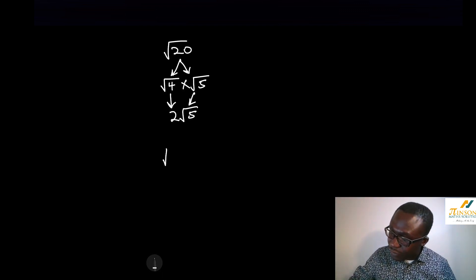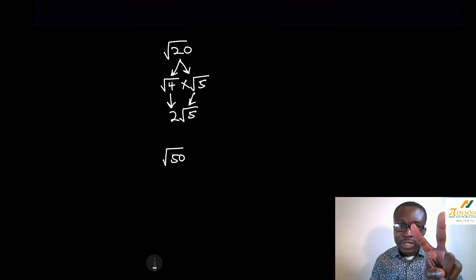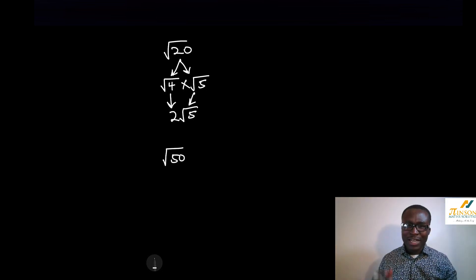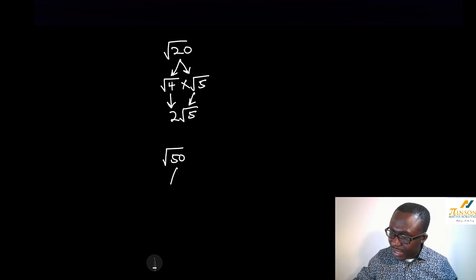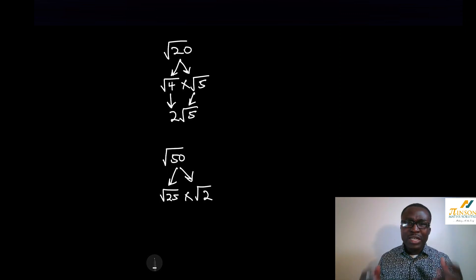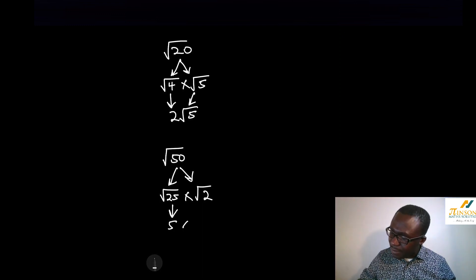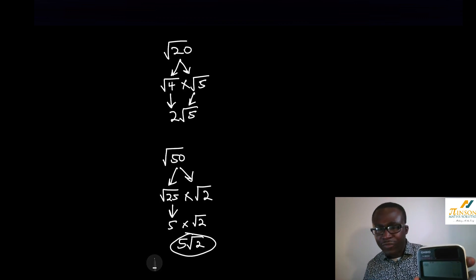Let's try square root of 50. Pause and have a go if you think you've got it. We need two numbers that multiply to make 50, where one is the largest square number. That's 25, since 25 times 2 is 50. Square root of 25 is 5, and multiplying by square root of 2 gives us 5 root 2. You can check this on your calculator — type in square root of 50 and you get 5 root 2.